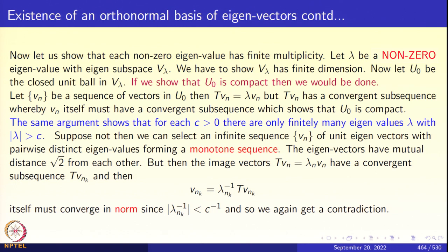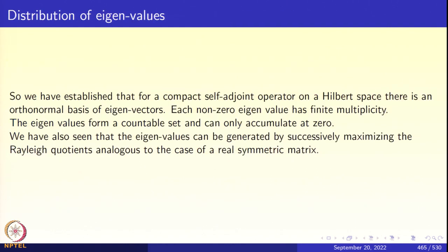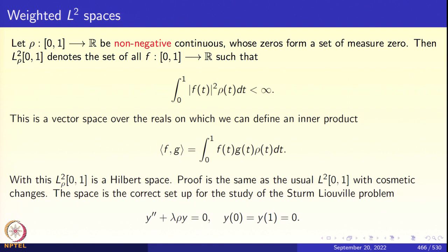That completes the proof of the theorem. So far we have established: for a compact self-adjoint operator on a Hilbert space, there is an orthonormal basis of eigenvectors; each non-zero eigenvalue has finite multiplicity; the eigenvalues form a countable set with 0 as the only possible accumulation point; and the eigenvalues can be generated successively by maximizing Rayleigh quotients, analogous to the case of a real symmetric matrix. Now we apply this to the study of two-point boundary value problems, where eigenfunctions give us a generalized Fourier series.